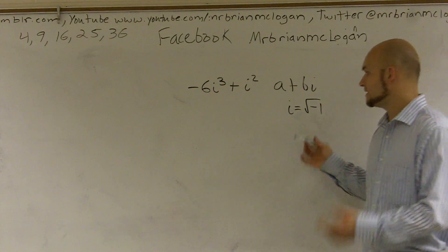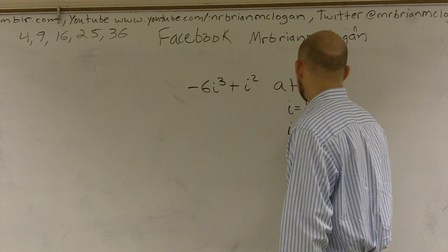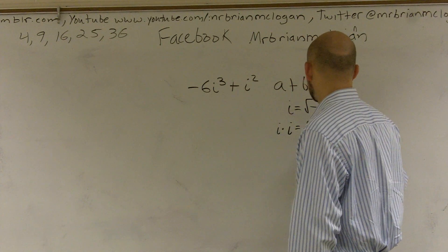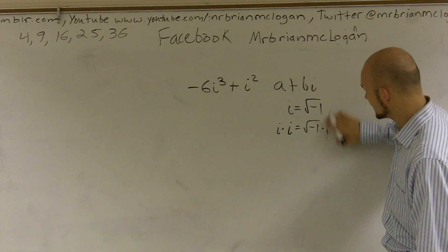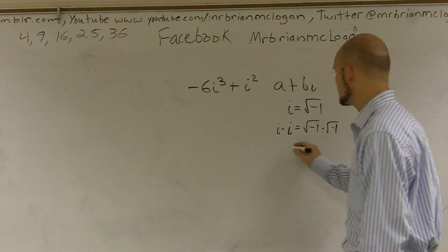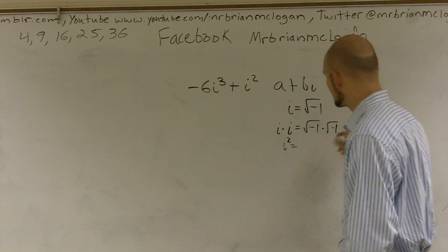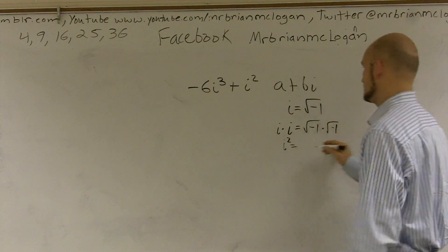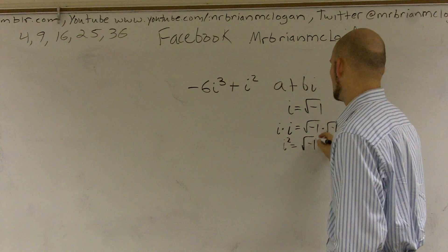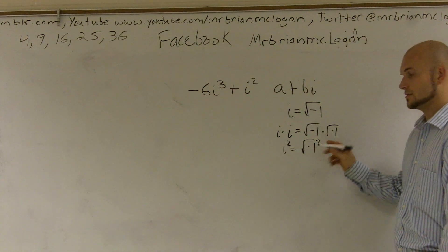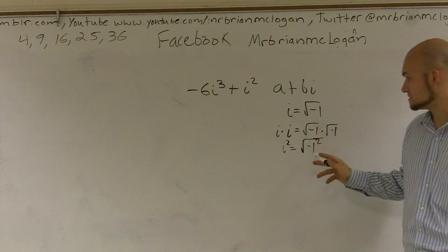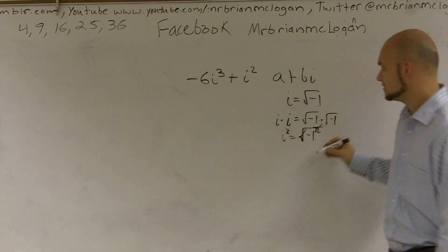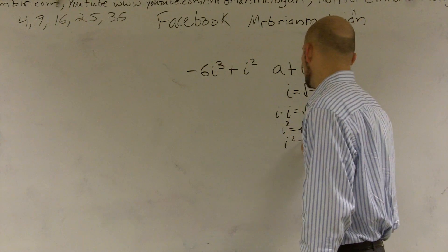The way that we always go through it: i is equal to the square root of negative 1. If I multiply by i on both sides — well, instead of multiplying by i, I can multiply by the square root of negative 1 again. So this becomes i squared equals the square root of negative 1 times the square root of negative 1, which is the square root of negative 1 squared. Those cancel out, so i squared equals negative 1.